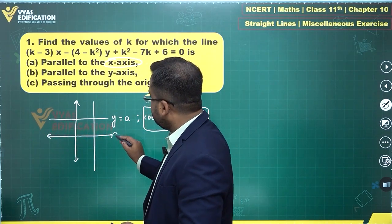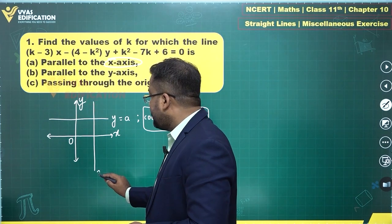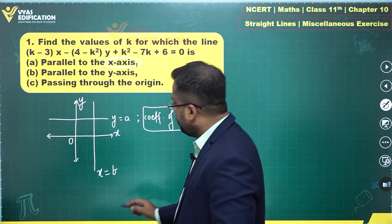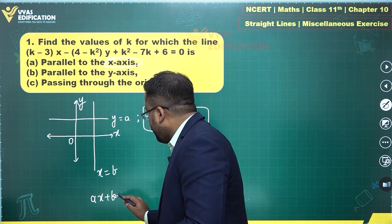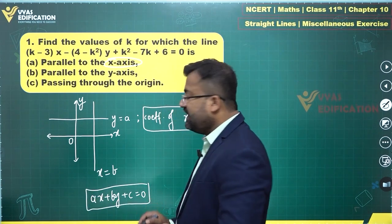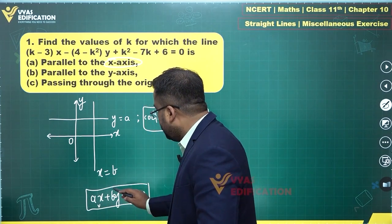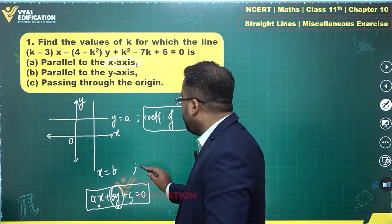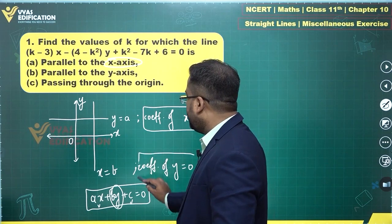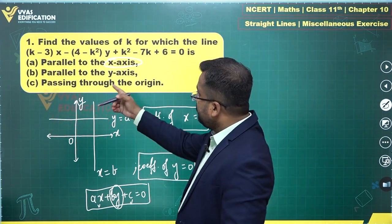Similarly, for a line parallel to the y-axis, the equation will be of the form x = constant. Comparing with the general equation ax + by + c = 0, you observe there is a term of x and a constant, but no term of y — which means the coefficient of y is simply 0.